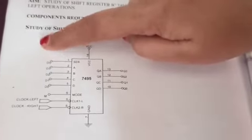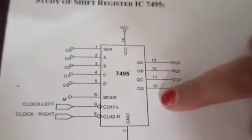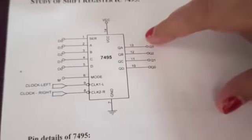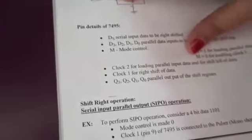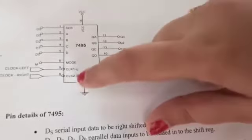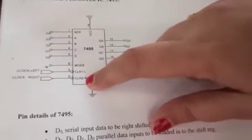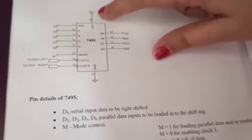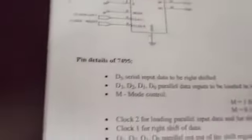This is the 7495 IC. DS is used for the serial input. D3, D2, D1, D0 are the parallel inputs, and pin numbers 13, 12, 11, 10 are used for the output pins. There are two clock pins: clock 9 is used for serial input and clock 8 is used for parallel input. Pin number 7 is ground and pin number 14 is VCC.